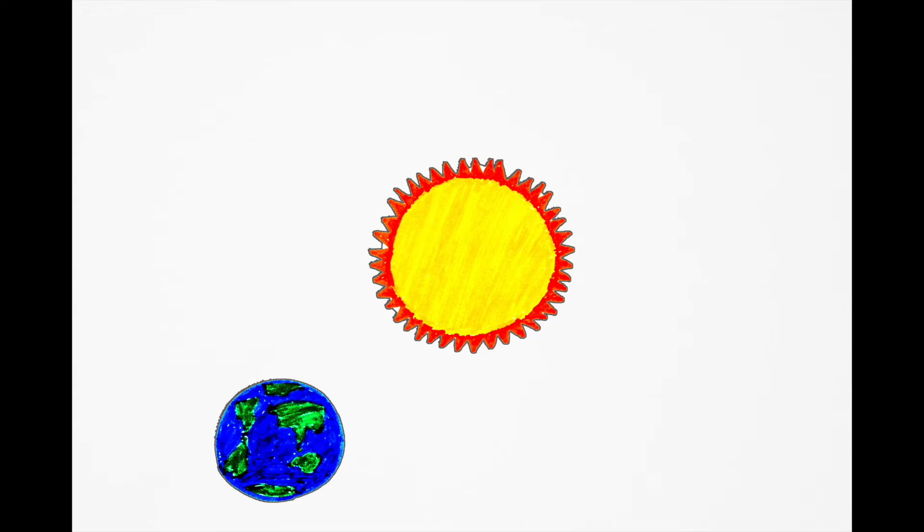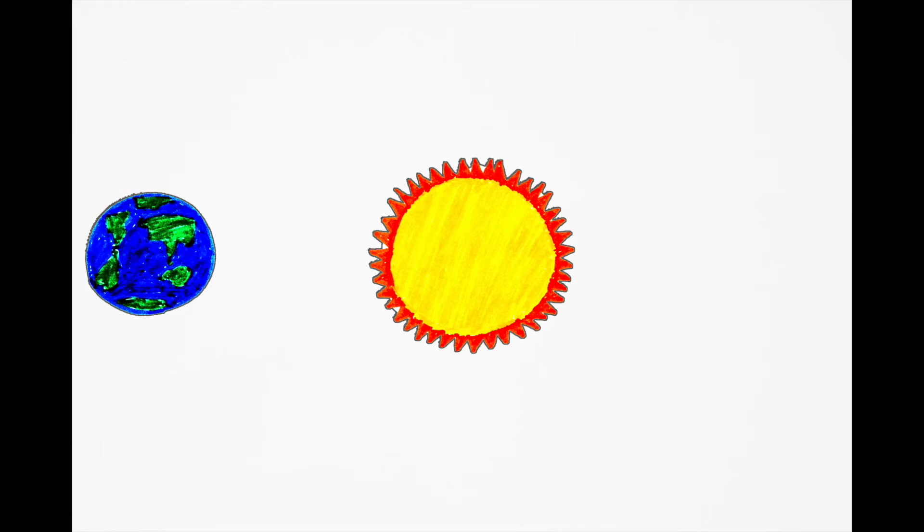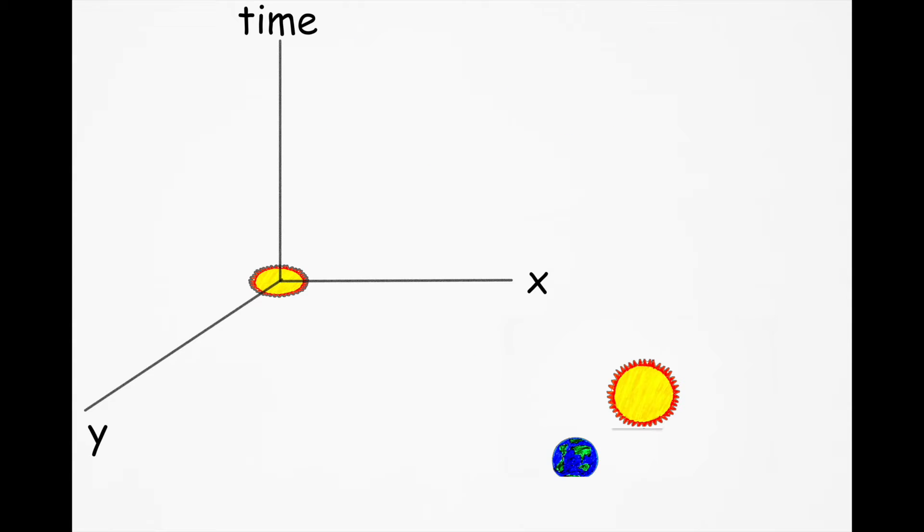For example, let's consider a solar system where Earth is moving around the Sun. Let's say I ignore an axis that is Z, as I don't want to be part of controversy, and I replace it with time. Now, as Earth orbits around the Sun, you can only define this position with respect to time.